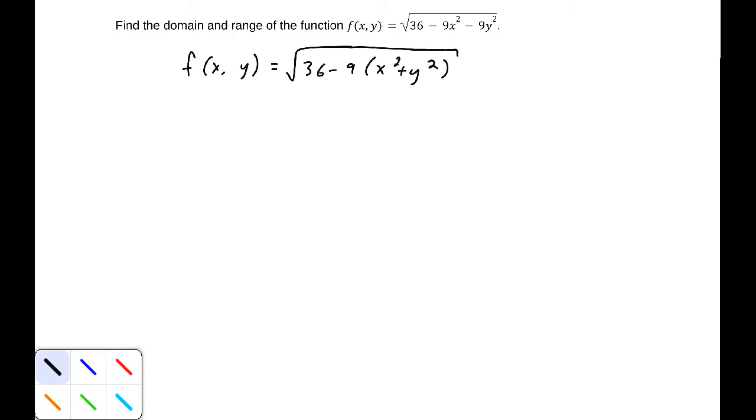Now, because x² + y² is always positive (greater than or equal to 0), and we have 36 minus 9 times that quantity, this would be undefined if x² + y² was greater than 4. So 0 ≤ x² + y² ≤ 4.